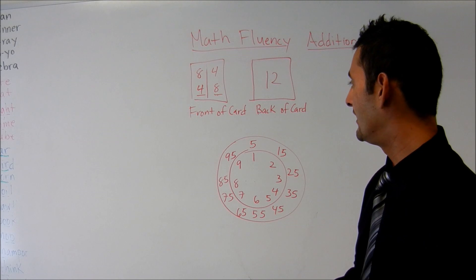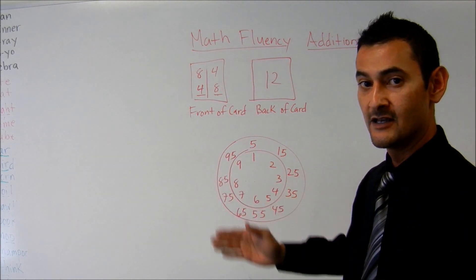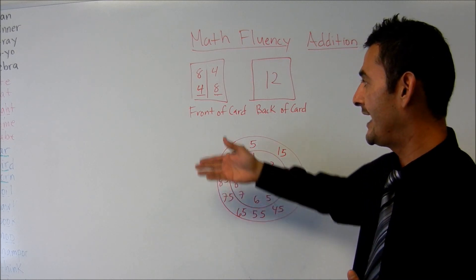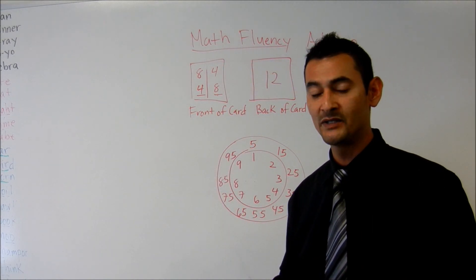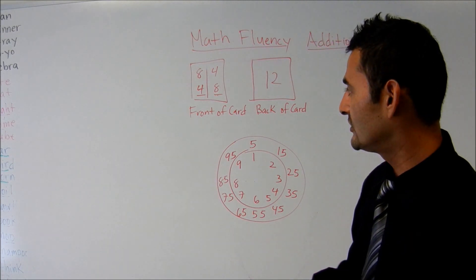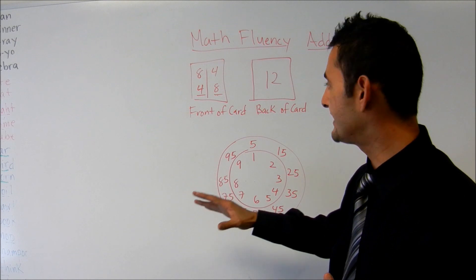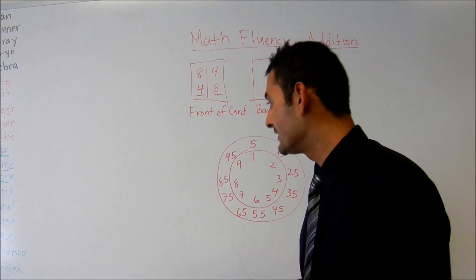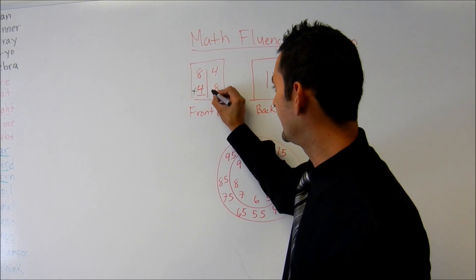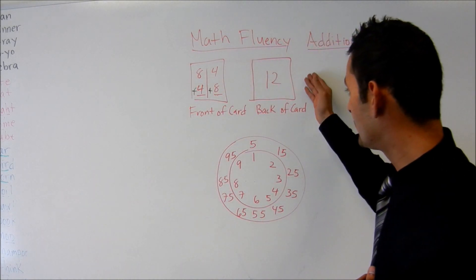Here's an example of a front card and a back card when it involves addition. So what you're going to do is you just want to create a bunch of these flash cards. And you can do it with multiplication, you can do it with division, you can do it with subtraction, you can do it however you want. But I just want to give you an example here. So here we have the front card. We have eight and four. We can certainly put a plus there and a plus there so that they're aware that we're adding. And then on the back, you can put 12.